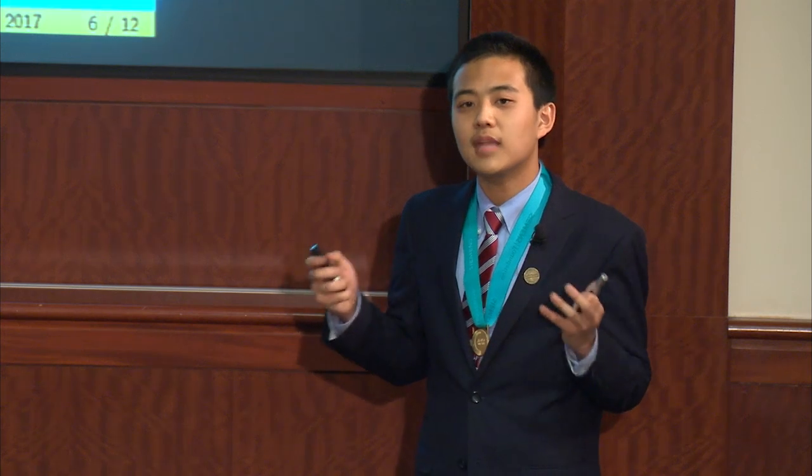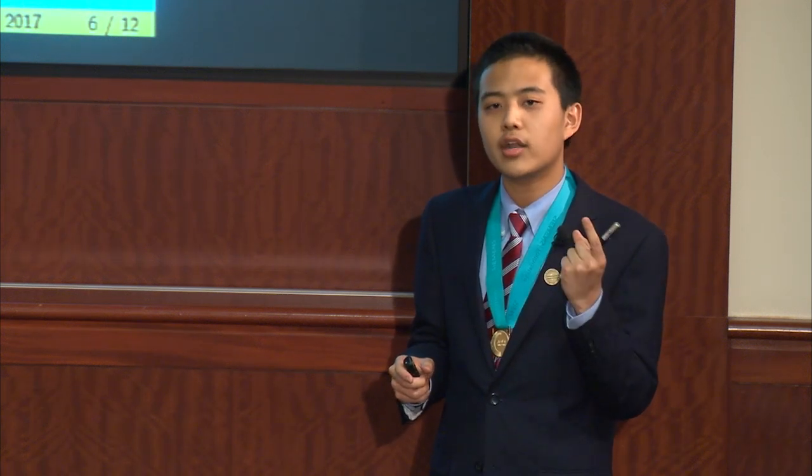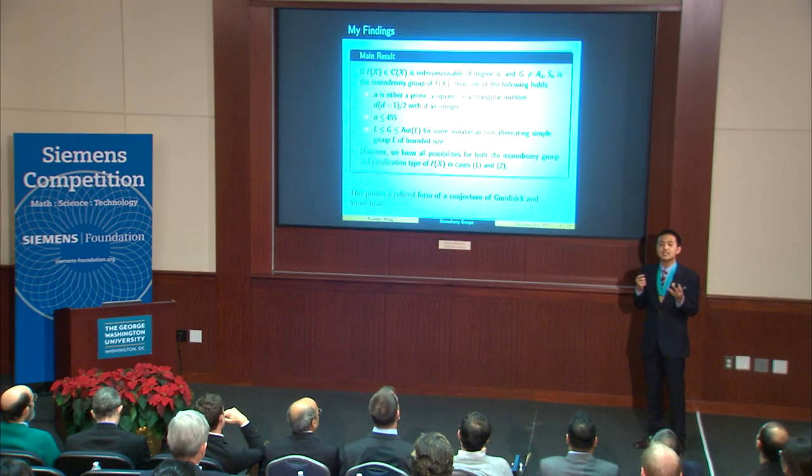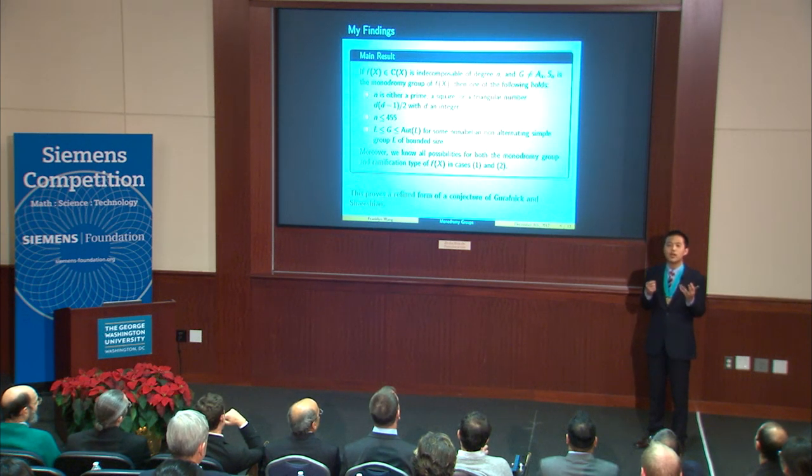With this question in mind, I'm pleased to announce my main result. If f(x) is an indecomposable degree n rational function and is not random, one of three things is true. First, n is either a prime, a square, or a triangular number. Second, n is at most 455. Third, the group G is an almost simple group of bounded size. A direct consequence of this result is the proof of a conjecture by Guralnick and Shareshian. Speaking of Guralnick, I was quite excited to see on Wednesday that the American Math Society has decided to award him the 2018 Cole Prize in Algebra.